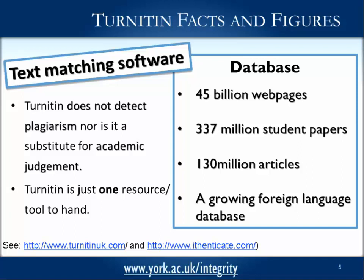What it does is check the text against a large database. This includes billions of web pages that are not password protected. It also checks all student papers submitted to Turnitin. So for example, if a student submitted a paper last year and it's in the Turnitin database, and a first-year student borrows that paper and submits it as their own, it will show up. That also raises questions about making assignments plagiarism-proof — for example, not running the same essay questions year after year. That type of cheating has always gone on in universities. It also checks against a database of articles, and Turnitin has deals with some major publishers to check their work as well. So if a student has copied and pasted a paragraph from a journal article, the chances are it's going to show up.